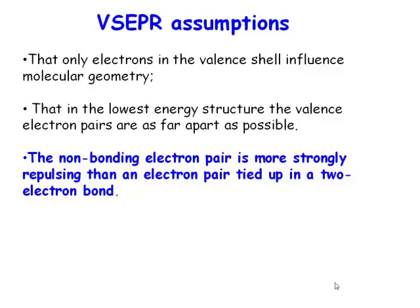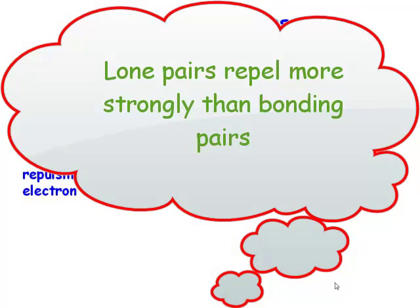Non-bonding pairs of electrons, lone pairs, because they're closer to the central atom, actually repel more strongly than bonding pairs.